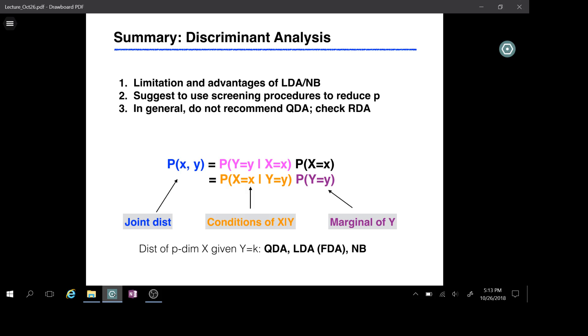Here's a quick review on discriminant analysis where we learn the joint distribution of X and Y by learning the orange component, X given Y, and the purple component, the margin of Y. Then we put them together to calculate the conditional probability Y given X, which is a key quantity for our classifier. Depending on how we estimate the model X given Y, we could have QDA, LDA, or Naive Bayes.